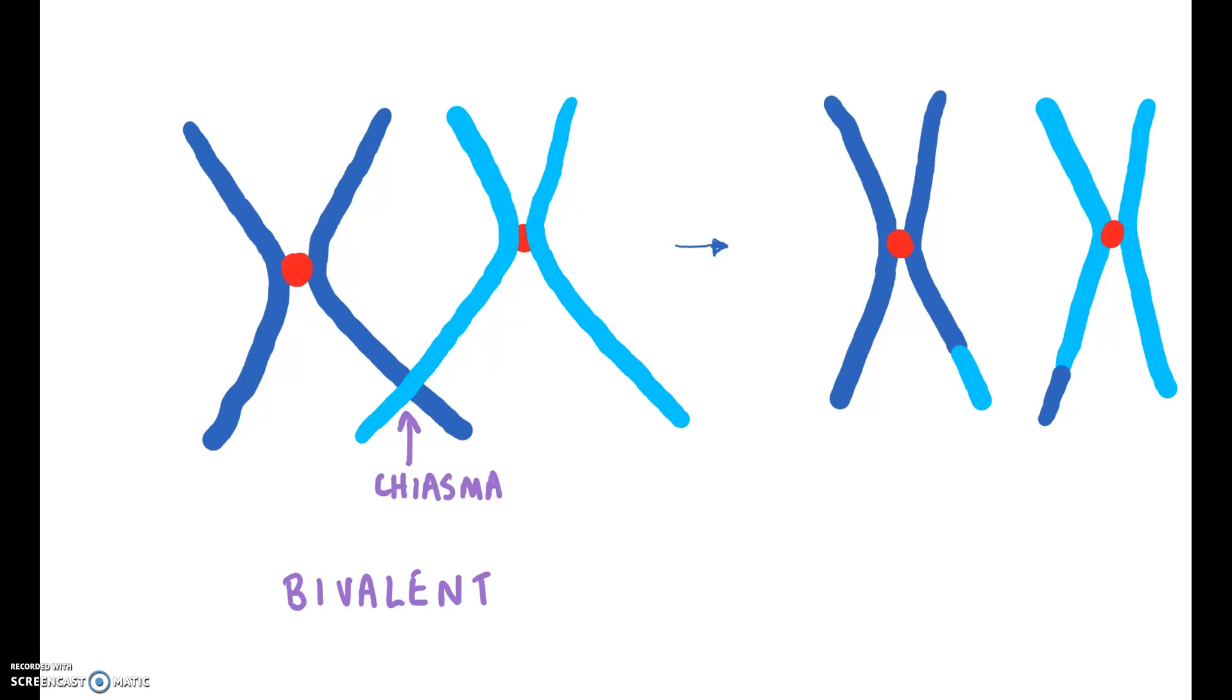At the chiasma, you can have synapsis. And what happens in synapsis is that the DNA strand literally breaks off and reattaches. And so the result is here, where you have a chromosome that has a little bit of a different chromosome attached to it, and then that chromosome is attached to the other one.